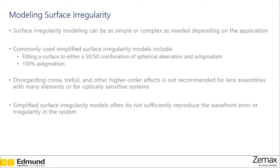Surface irregularity modeling can be as simple or complex as needed, depending on the application. Some simplified surface irregularity models just look at spherical aberration and astigmatism, and fit whatever the actual performance is to these aberrations. This may be appropriate for a handheld optic like a magnifying glass where you're not too concerned with high performance. However, disregarding coma and trifoil and other high-order effects is not recommended for lens assemblies or optically sensitive systems. Simplified surface irregularity models often do not sufficiently reproduce the wavefront error or irregularity in the system to the degree that is needed.